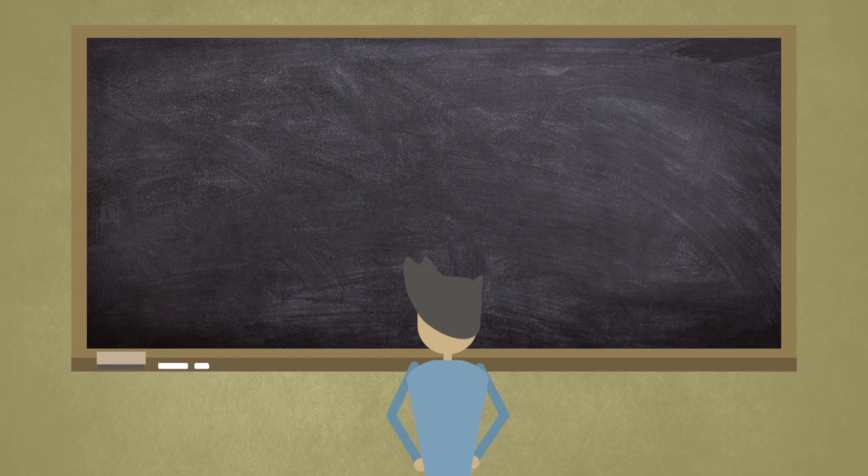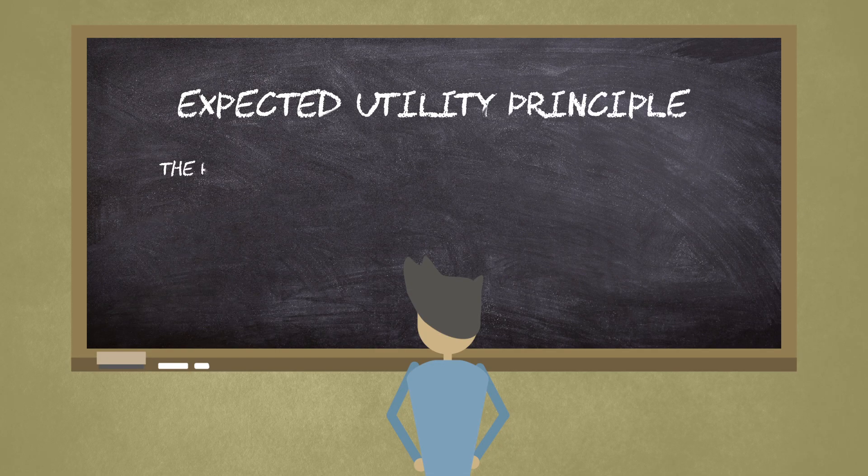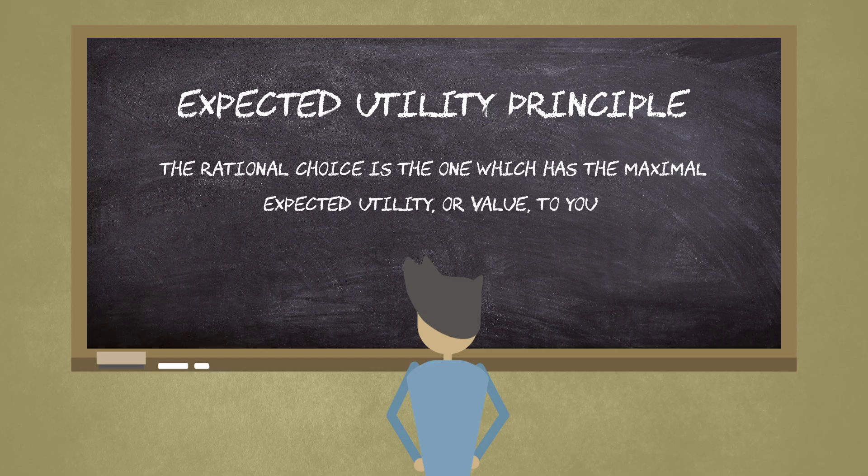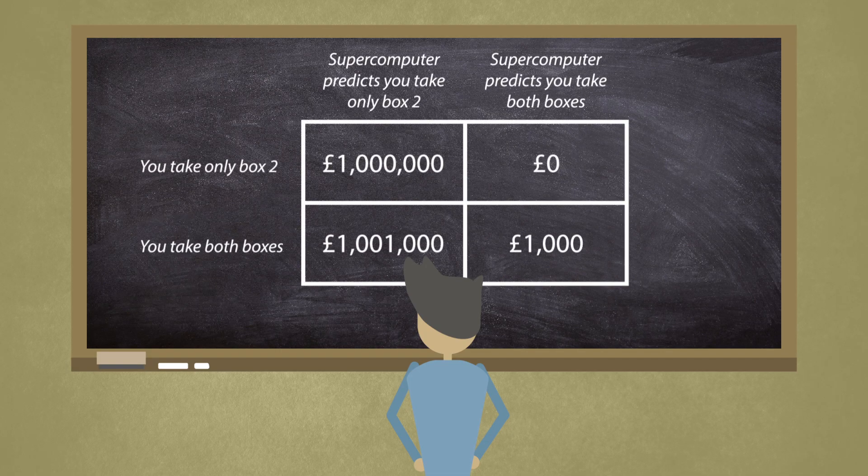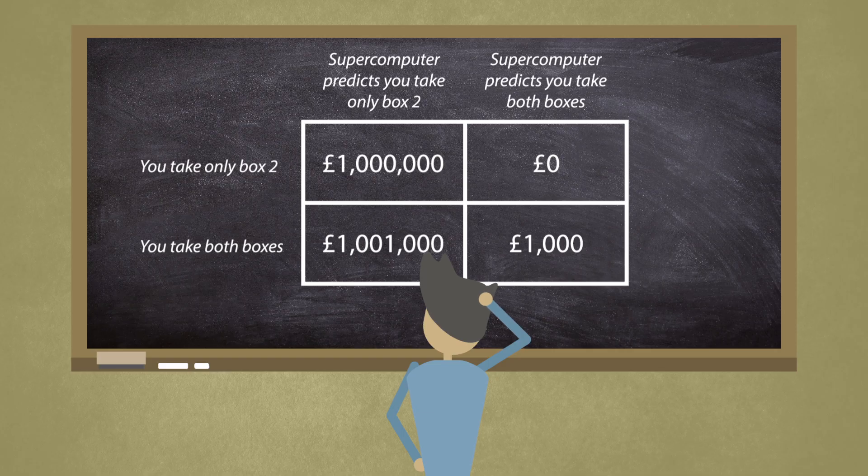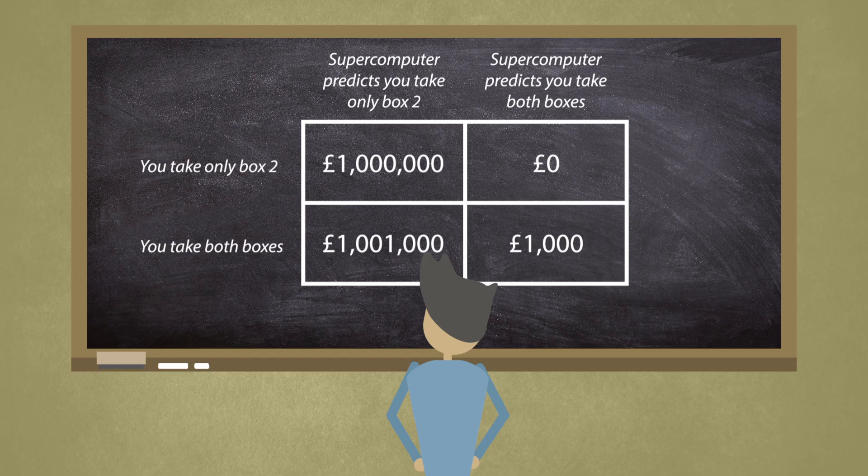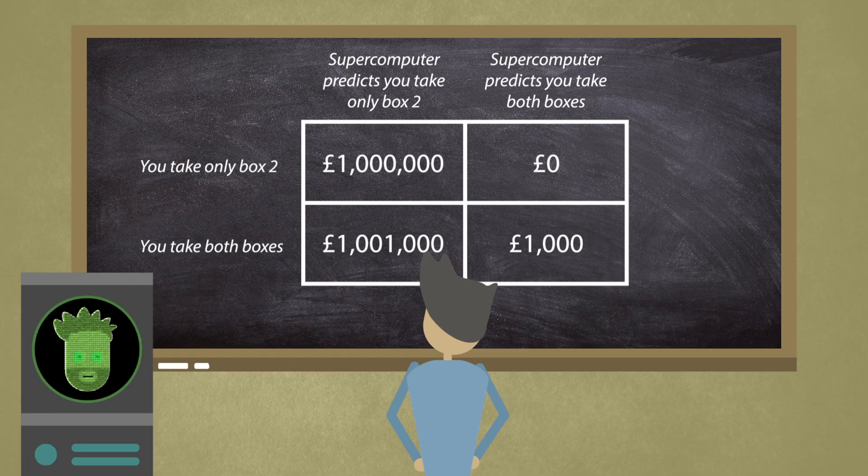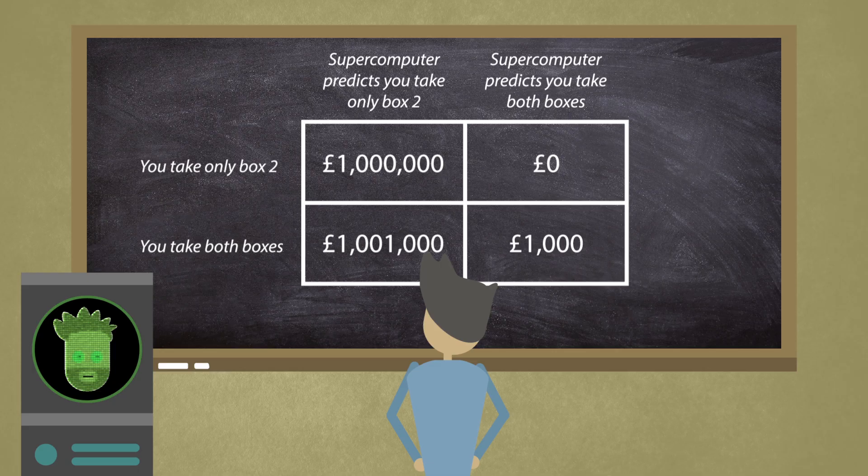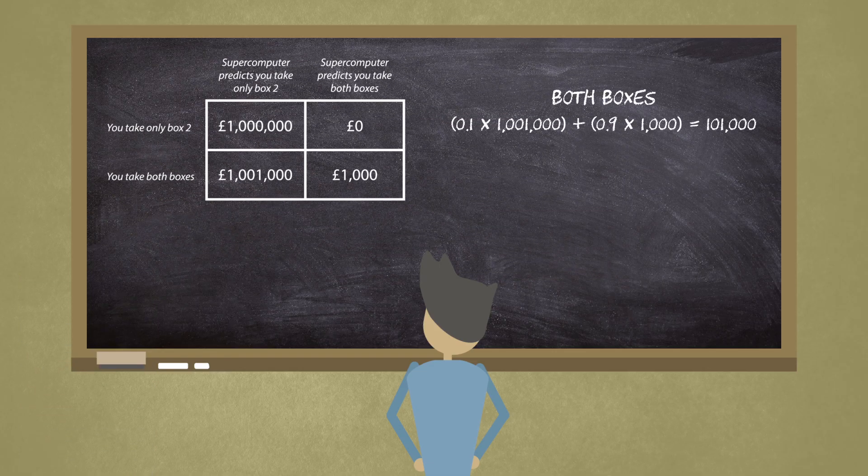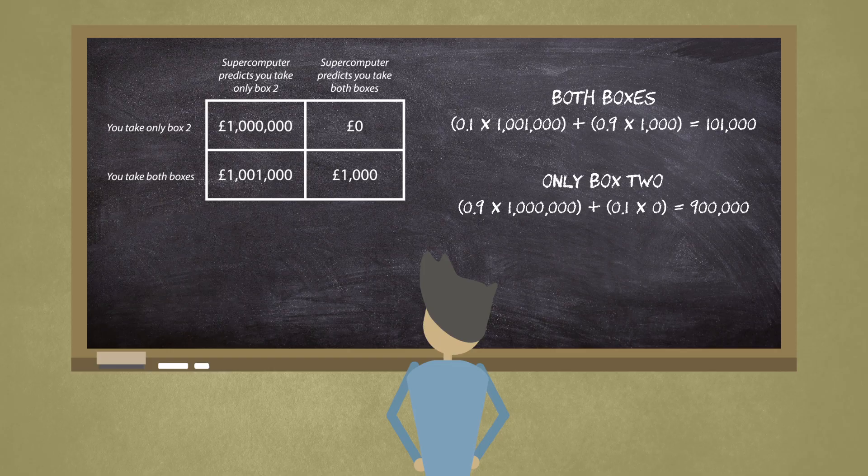However, this contradicts the expected utility principle, which states that the rational choice is the one which has the maximal expected utility, or value, to you. We can work out the expected utility of each action by multiplying each of its mutually exclusive outcomes by the probability of the outcome, given the action. Let's say, being conservative, that the supercomputer can predict the future with 90% accuracy. We can then work out the expected utility of both actions, like so. We can see, therefore, that using the expected utility principle, the rational choice is to choose to open only the second box.